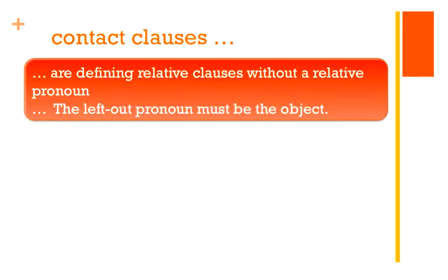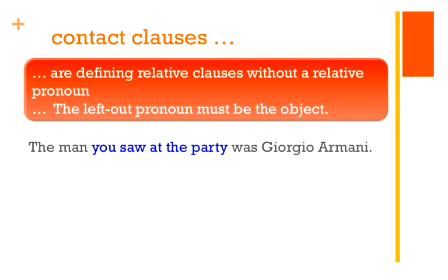Now we have the so-called contact clauses. They come right out of the defining relative clauses. Contact clauses are defining relative clauses — remember, no comma — without a relative pronoun. The pronoun is left out. The only important thing is that the left-out pronoun must be the object of the relative clause, because a subject you have to have. So it must be the object. For example: 'The man you saw at the party was George Armani.' The complete sentence is 'The man who you saw at the party was George Armani.' 'You' is your subject, 'saw' is your verb, and 'who' — the left-out pronoun — is the object.